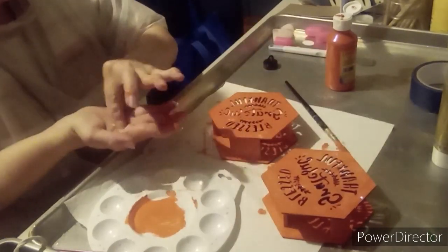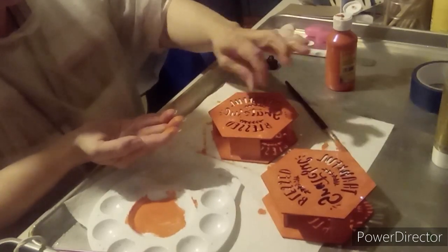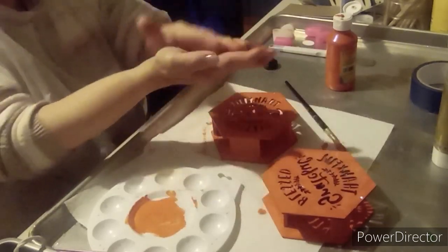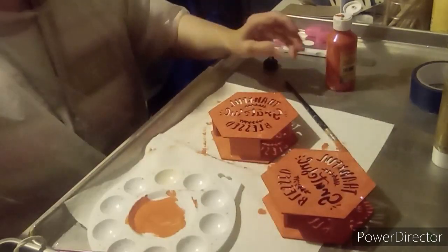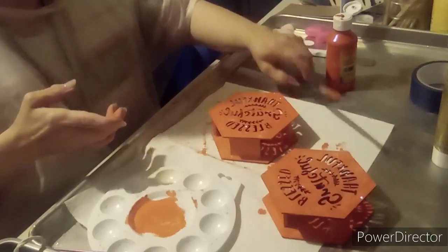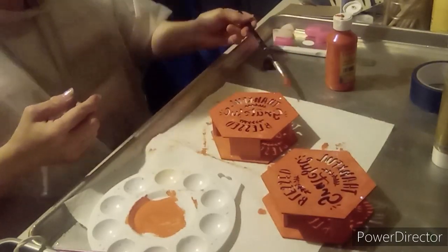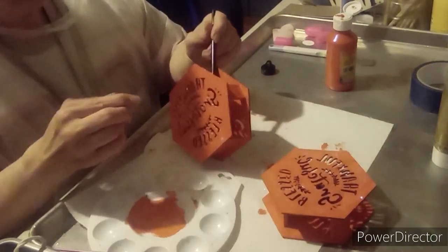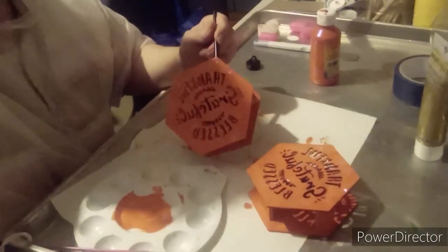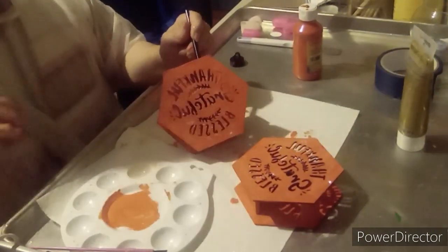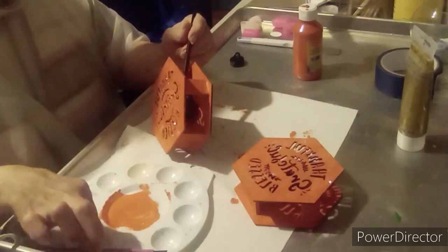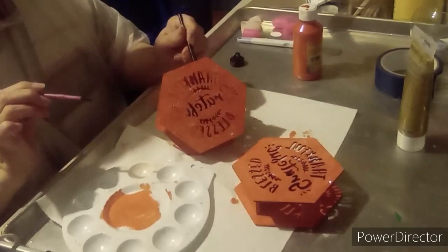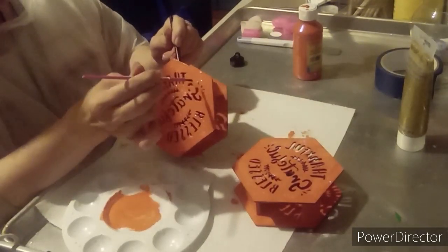Now, if your paint kind of clogs up, like the little area here. Now the paint clogged it up. I just took a small paint brush and poked it in that little hole so the light can shine through.